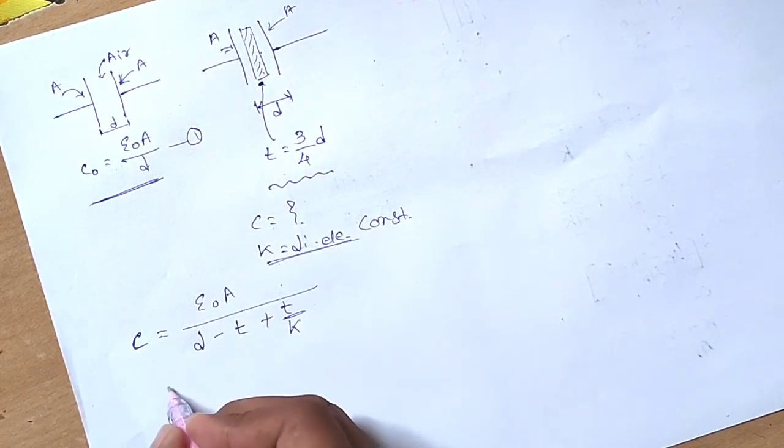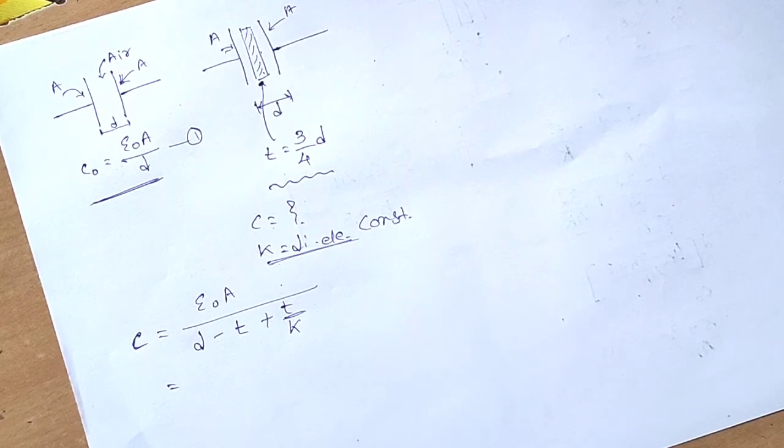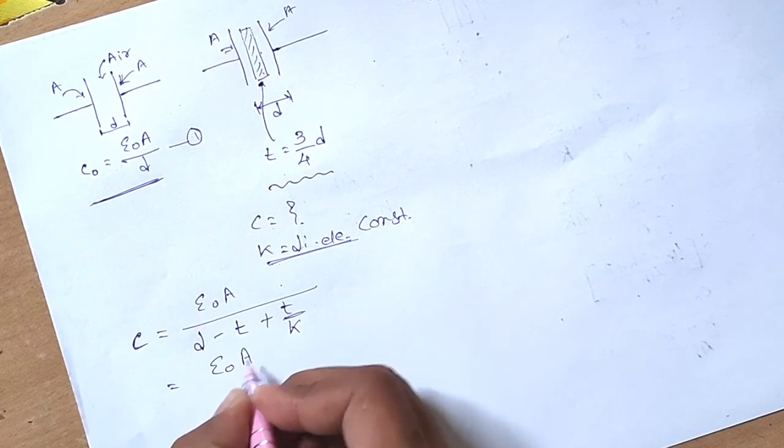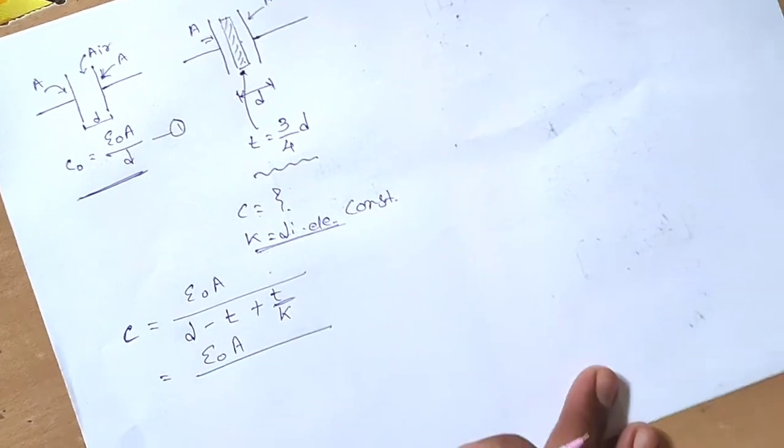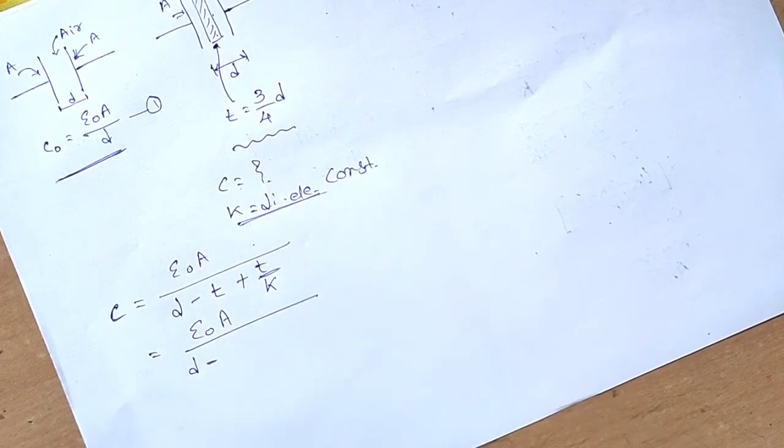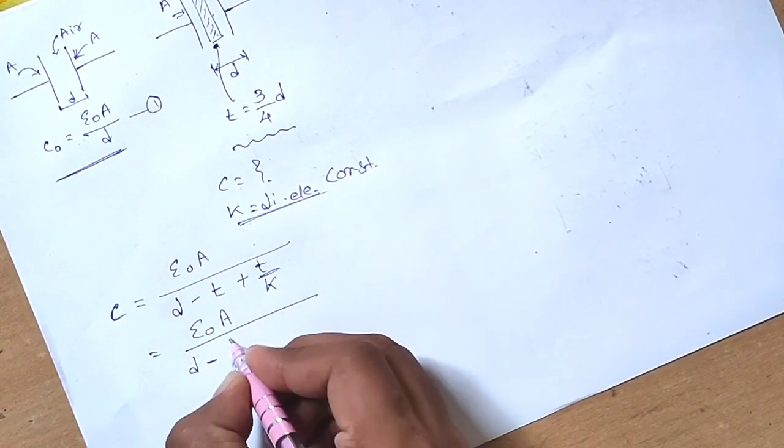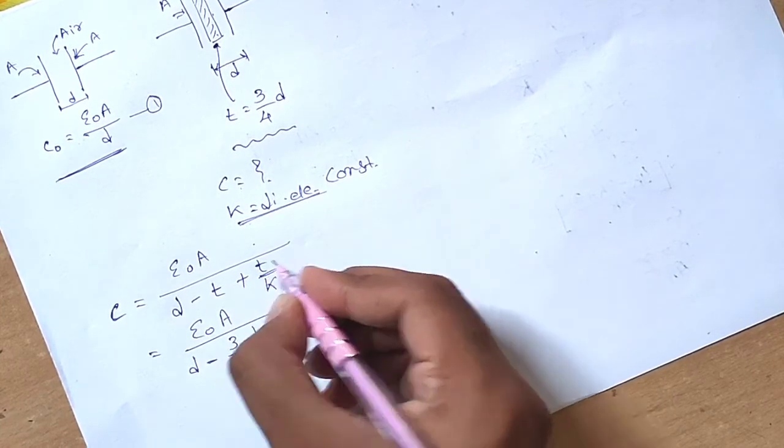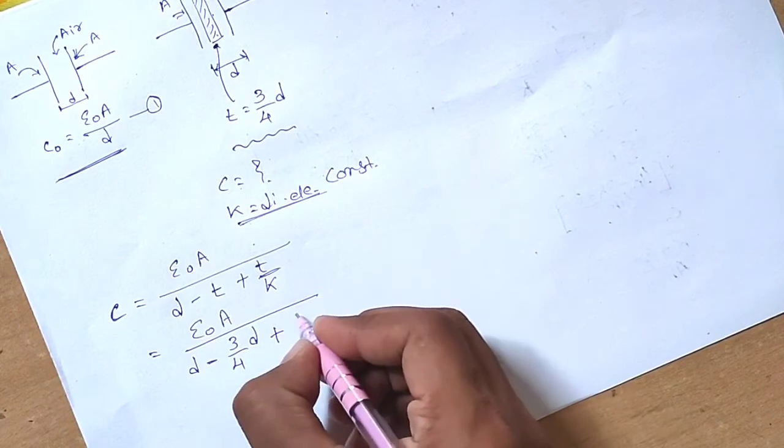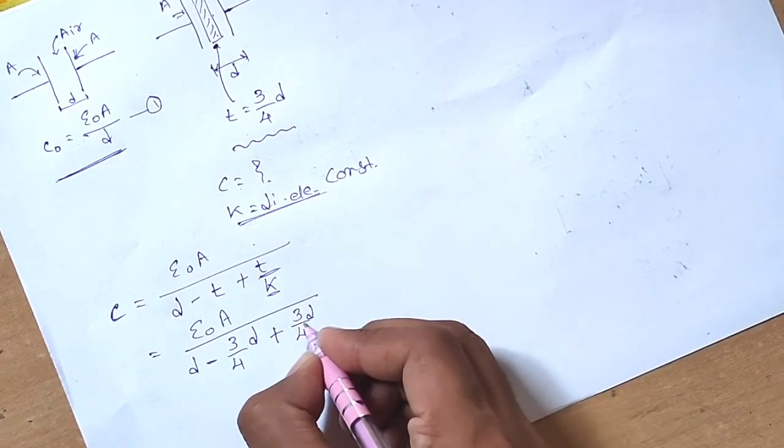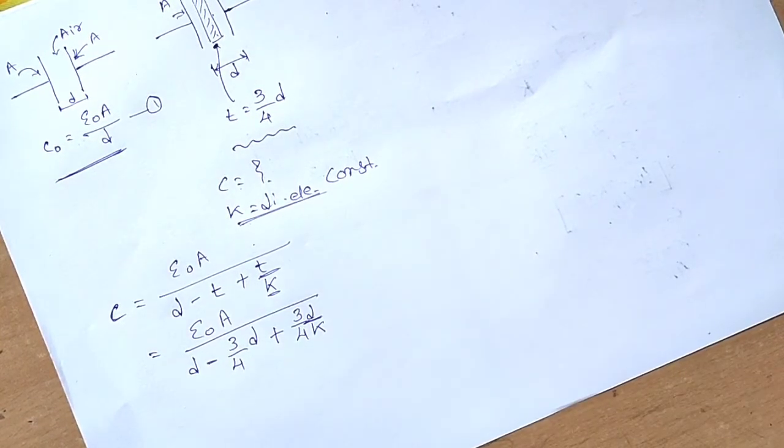Now we have to put the value through mathematical steps to obtain the answer. C = ε₀A / [d - 3d/4 + 3d/4k]. In the denominator, we can see d is common, so let's take d common.